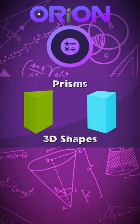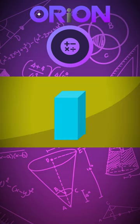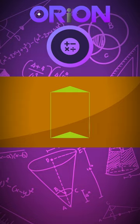A prism is a kind of 3D shape where the top and bottom faces are the same. A prism has two flat bases that are the same, but they can be different shapes depending on the name. Where the two bases meet from corresponding sides.